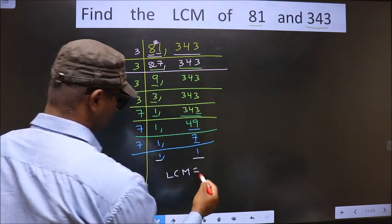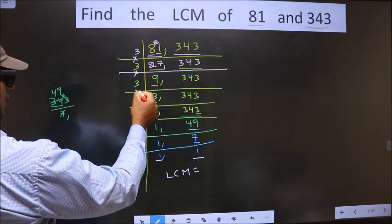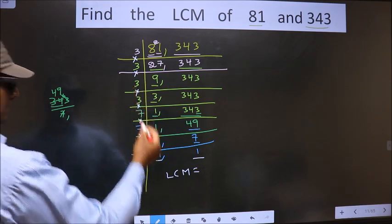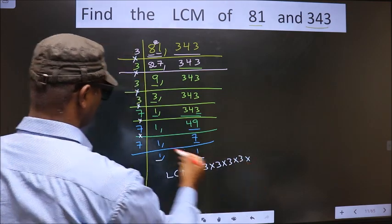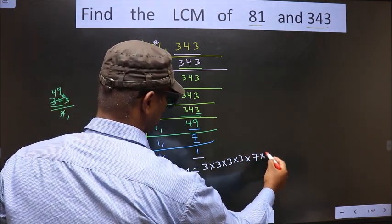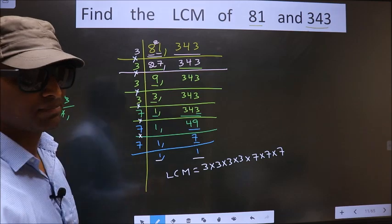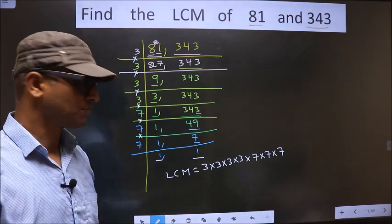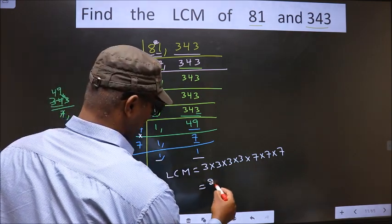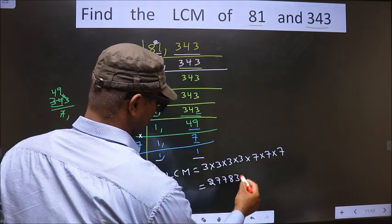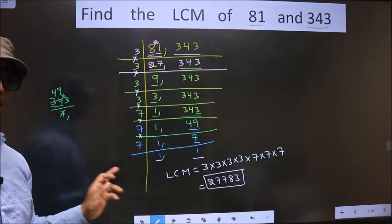Now our LCM is the product of these numbers. That is 3 into 3 into 3 into 3 into 7 into 7 into 7. Multiply all these numbers — whatever number you get, that will be your LCM. So multiply all these numbers, you get 27783. So this is our LCM.